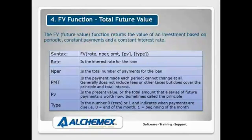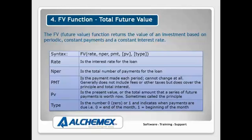So the first one, let's have a look at the interest rate for the loan or the amount. The NPER — the number of periods. The payment — this is the payment that I'm going to be depositing over the course of this particular investment. Present value and type. Now it's not Future Value because we're working out the Future Value. PV is optional and type is optional.